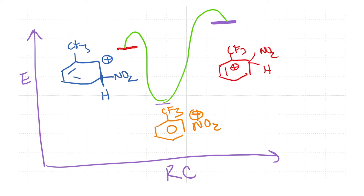What we conclude from this analysis is that the meta compound is not particularly stable. The reason it is formed is that it is less unstable compared to the ortho or para.